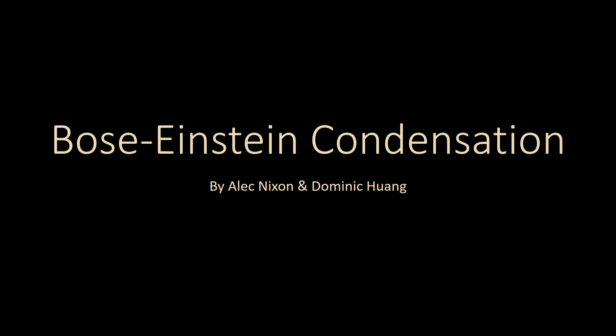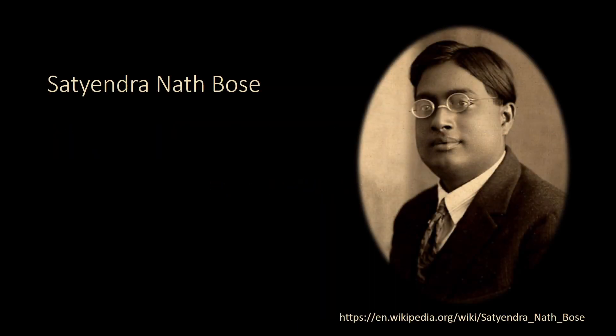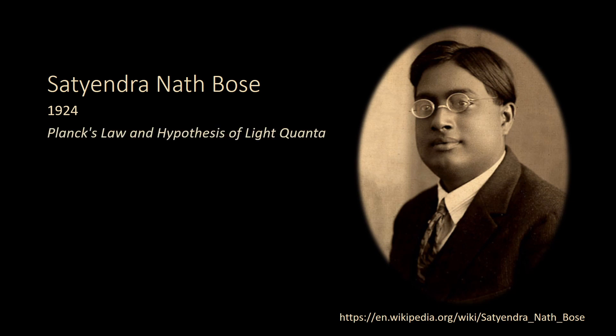Physicist Satyendra Nath Bose felt that Planck's constant of black-body radiation, whilst useful, was lacking, as all previous attempts to derive it relied on classical mechanics. In 1924, Bose sent a paper with a statistical derivation of the Planck distribution law for photons to Albert Einstein, who translated it into German and submitted it for publication.